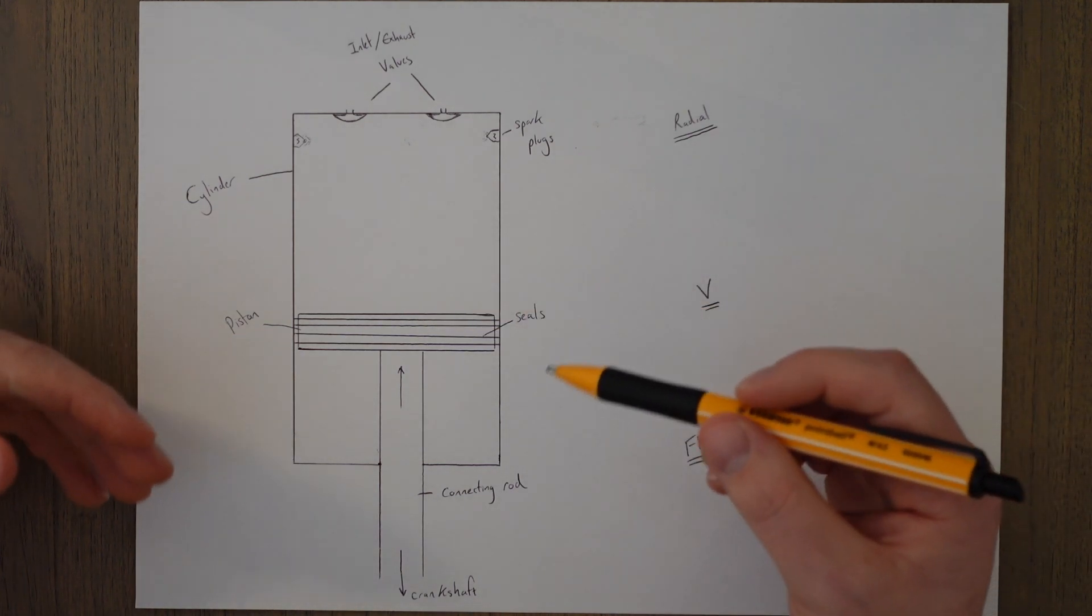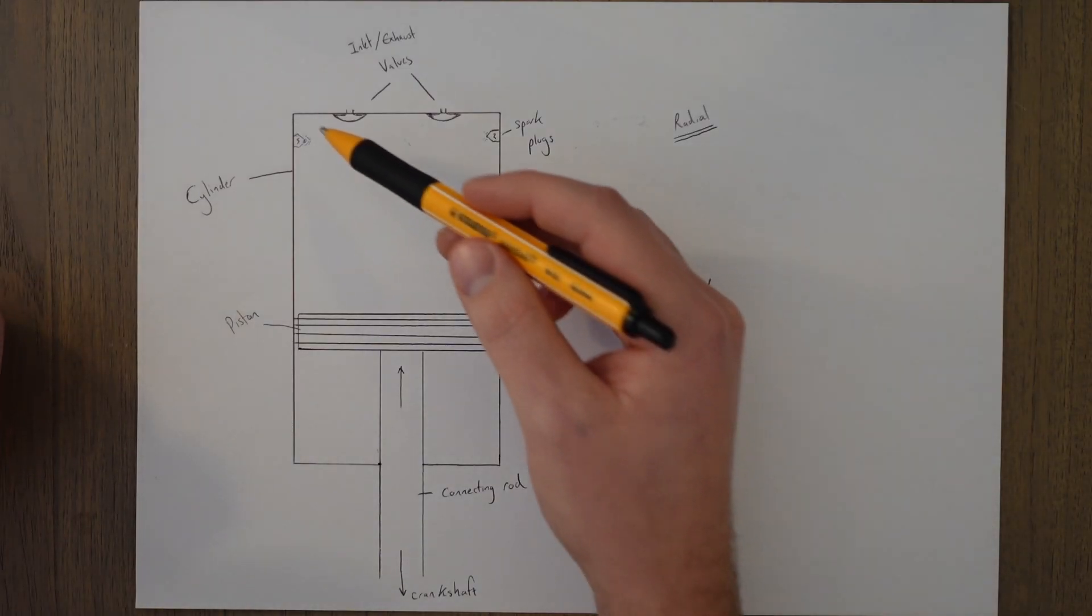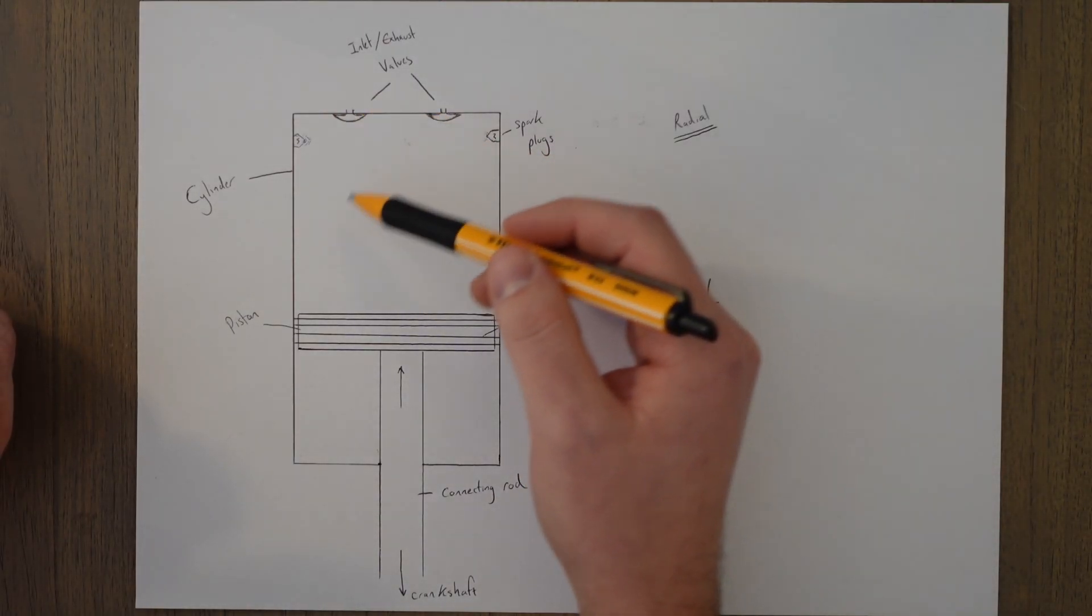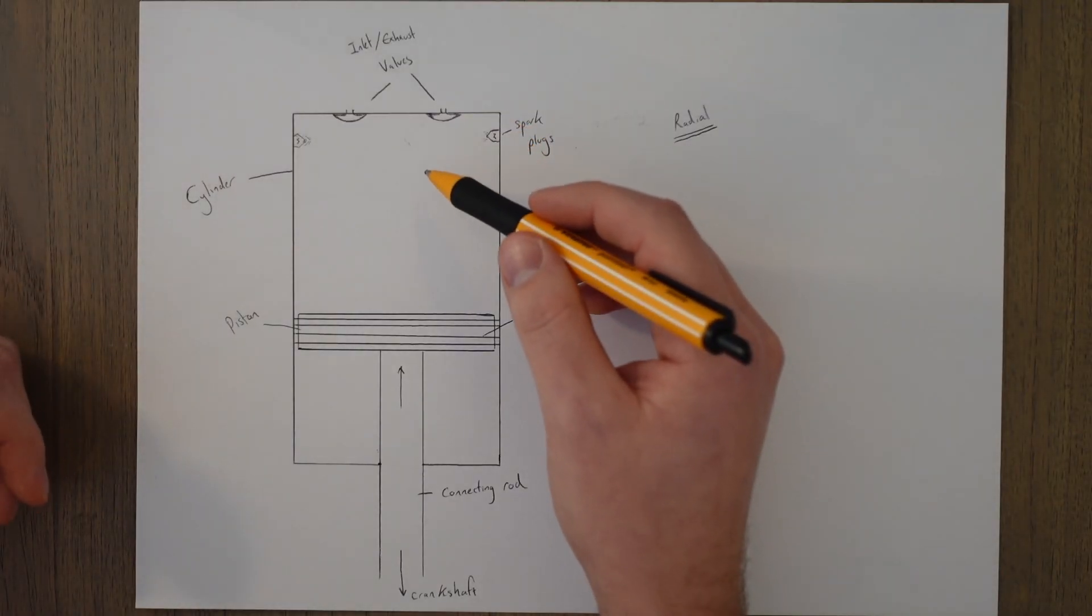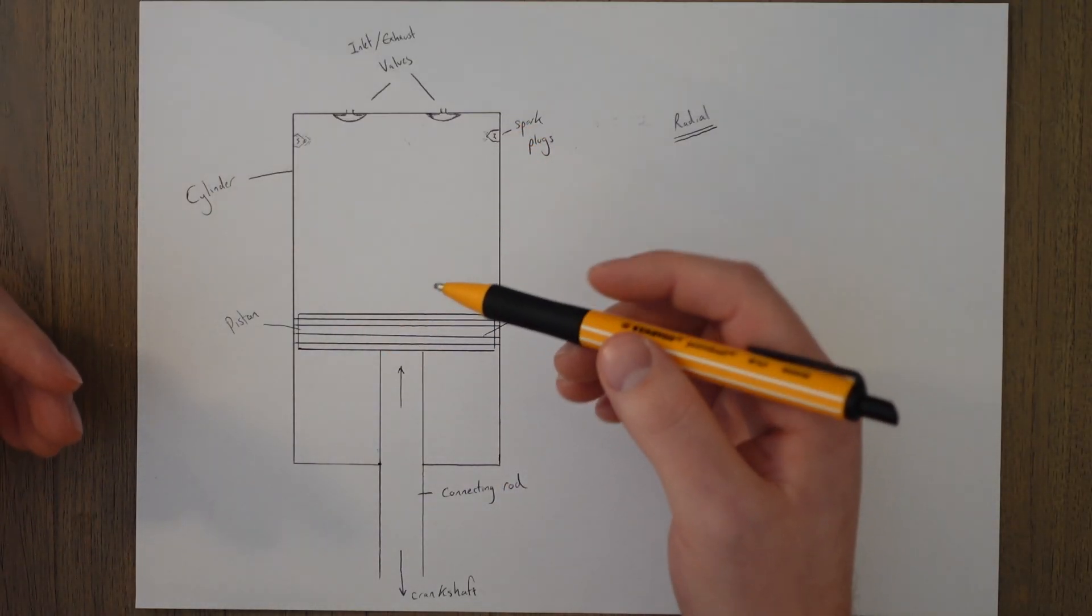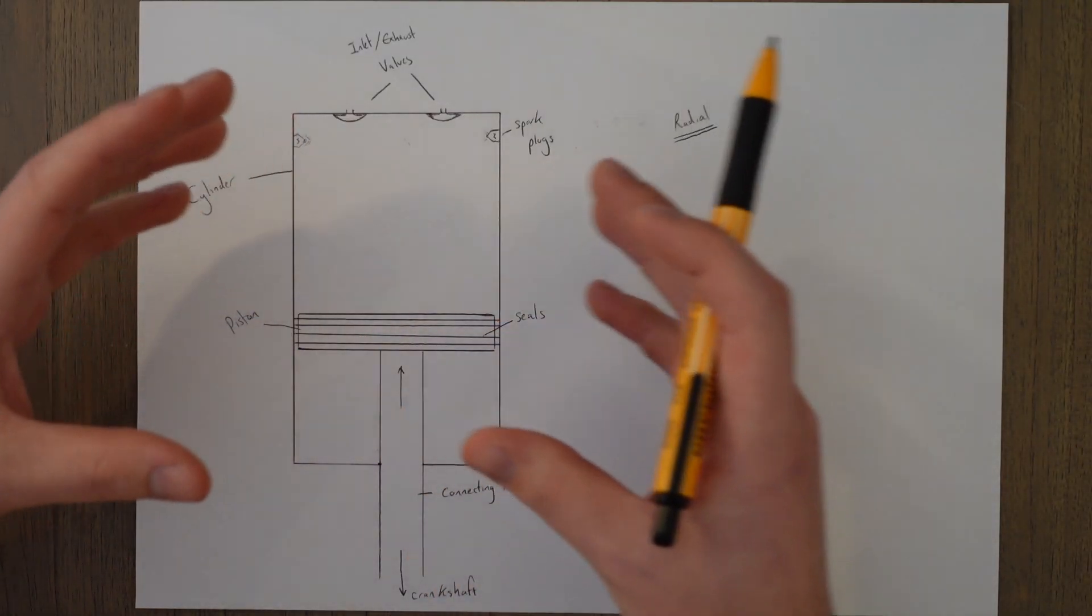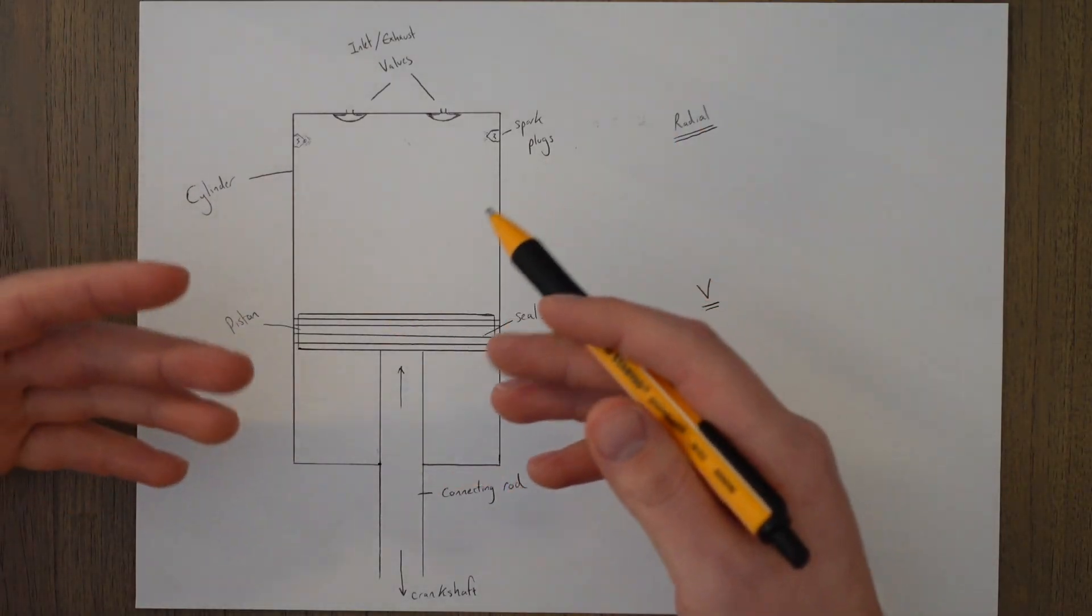One of the major factors in how much power an engine can produce is how much air and fuel mixture can be ignited in the cylinder. The more gas is ignited, the more power is produced. This can be done by increasing the size of the cylinder, or we could just add more cylinders.